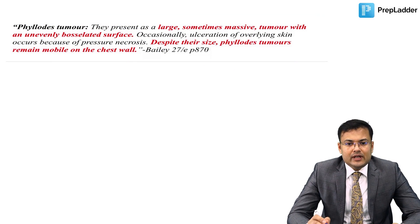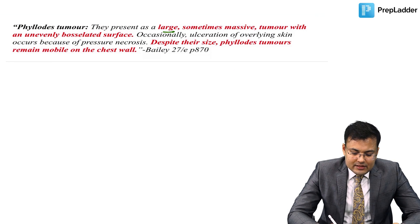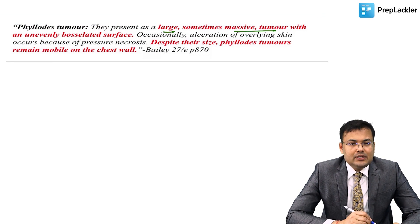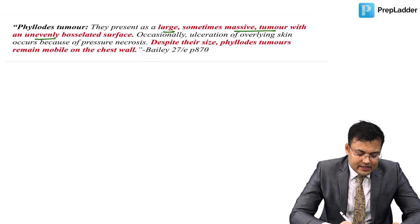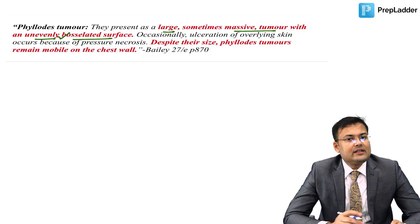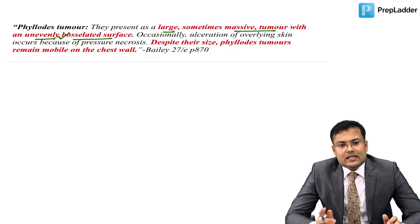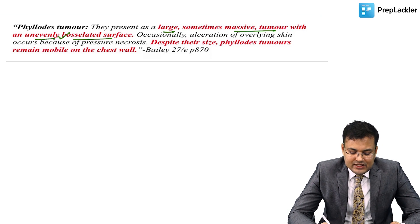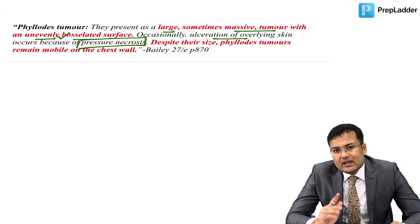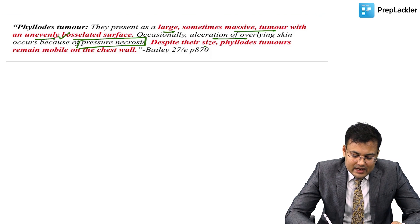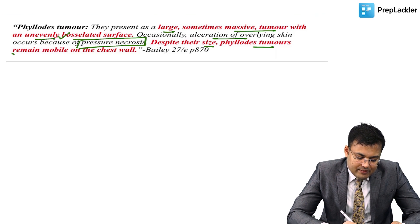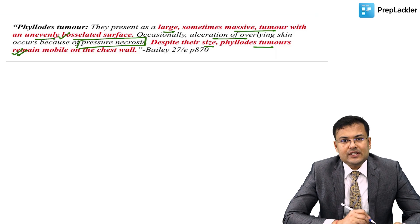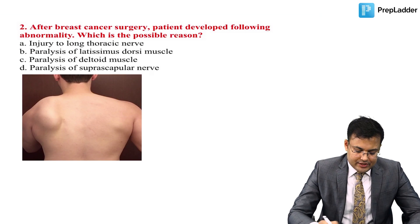Bailey's describes Phyllodes tumor as presenting as large, sometimes massive tumors with an unevenly lobulated surface. Despite occasional ulceration of overlying skin due to pressure necrosis, the skin is not invaded. Despite their size, Phyllodes tumors remain mobile over the chest wall.